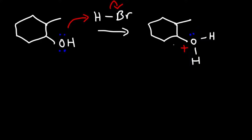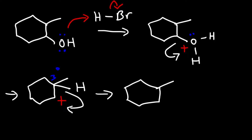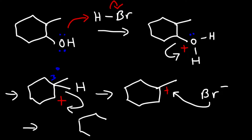The leaving group departs, giving us a secondary carbocation. Notice the secondary carbocation is next to a tertiary carbon, so a hydride shift will occur, giving us a more stable tertiary carbocation intermediate. The bromide ion then attacks the carbocation, and the final answer is a tertiary alkyl halide.